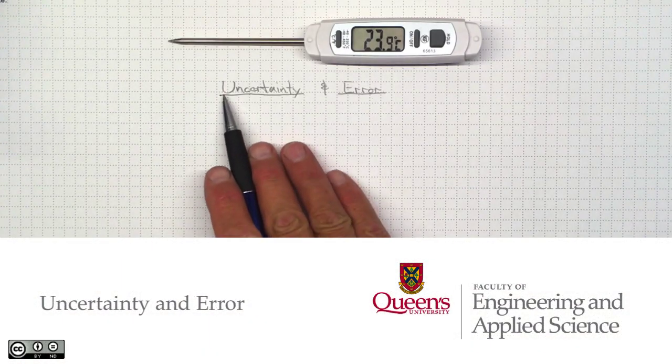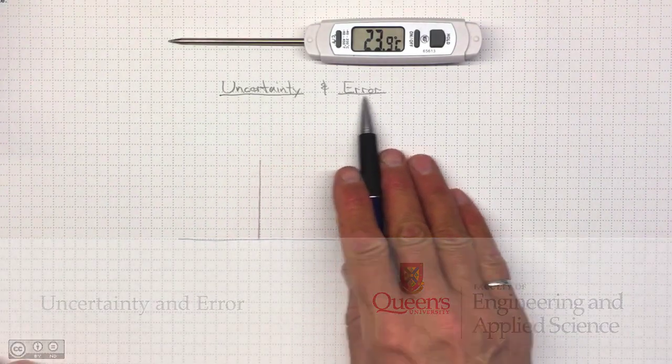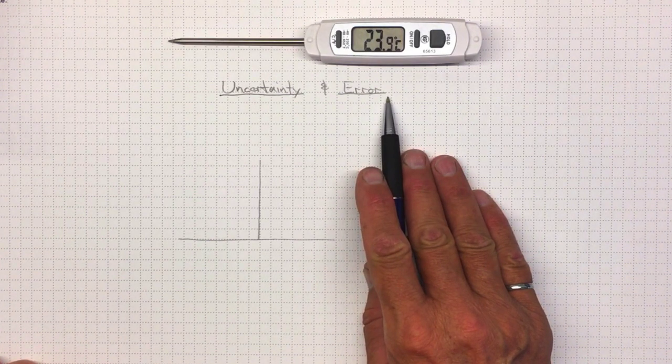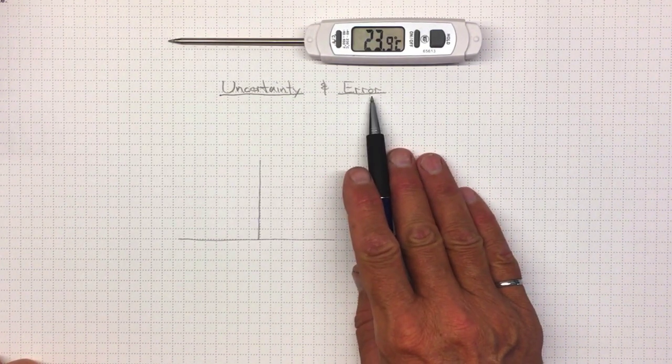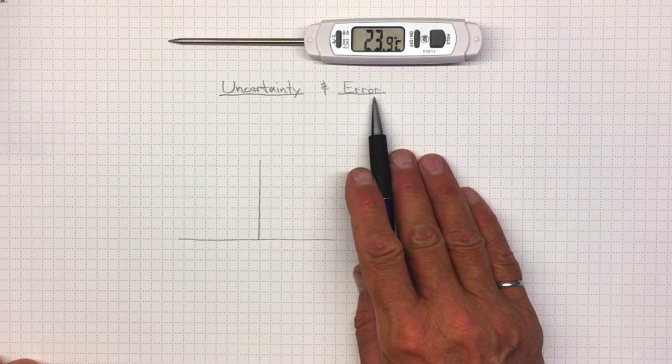Whenever we go to make a measurement, we need to have some idea of the uncertainty or errors in that measurement so that we know how good our measurement is and what kind of decisions we can make based on that measurement.